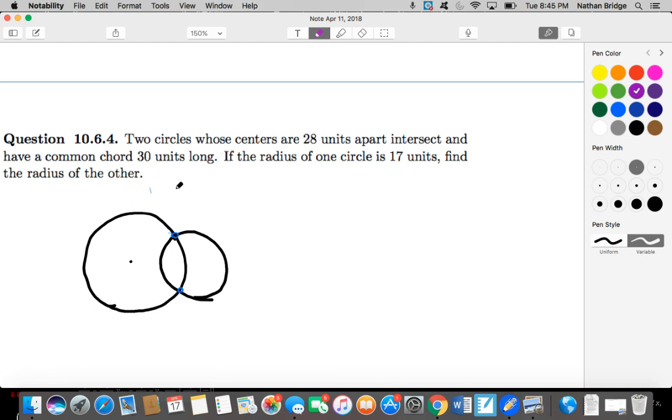What we have here is two circles that are 28 units apart. So what that means is their centers are 28 units apart. Here's one center, here's the other. You have this line with a length of 28, and they have a common chord that is 30 units long.